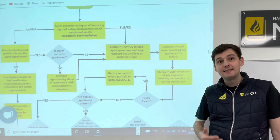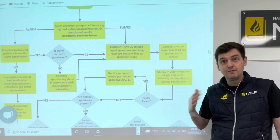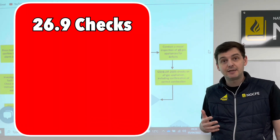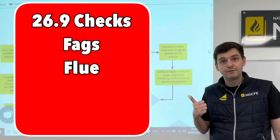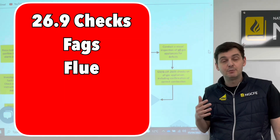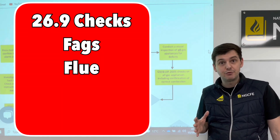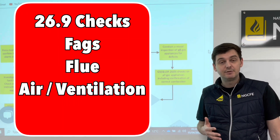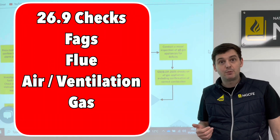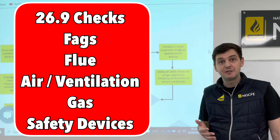Once you've conducted your visual checks, carry out 26.9 checks on any appliances in the property. First you visually inspect them, then you do your 26.9 checks — that's FGAS: flue. How do we test the flue? If it's an open-flued appliance we need to test for flue flow and spillage; if it's a room-sealed appliance we want to be testing it with the flue gas analyser, inspecting it throughout its length — is the flue secured, are there any signs of spillage? Then you've got ventilation: has the appliance got the relevant ventilation? Gas supply: is it gassing properly, does it have the correct burner pressures? And lastly, safety devices: is the flame supervision device working, etc.?